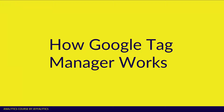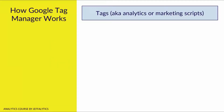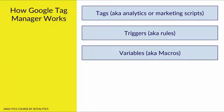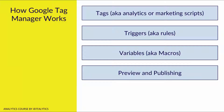Let's talk about how Google Tag Manager works. In this part of the tutorial, I want to talk about tags, which are the analytics or marketing scripts you put on your website. I want to talk about triggers, which are the rules for how those tags fire. I want to talk about variables — also known as macros — which are basically any type of dynamic content you want to put into your website tracking experience. And finally, preview and publishing your results.